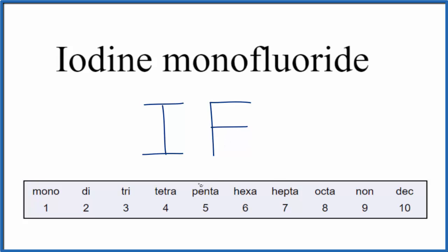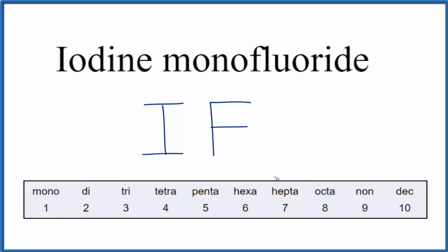If you were given the formula IF and asked to write the name, you know that you have two nonmetals, so you're going to have to use prefixes. In this case, we write iodine, because we don't put mono on the first one. And then for the fluoride, we do need to put the one there — monofluoride. This is Dr. B with the formula for iodine monofluoride. Thanks for watching.